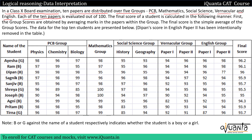Each of the 10 papers is evaluated out of 100. The final score of a student is calculated in the following manner: first, the group scores are obtained by averaging marks in the papers within the group. So if you want to find the group score, you find the average of marks of all the subjects in the group. The final score is the simple average of the group scores. The data for the top 10 students are presented below.